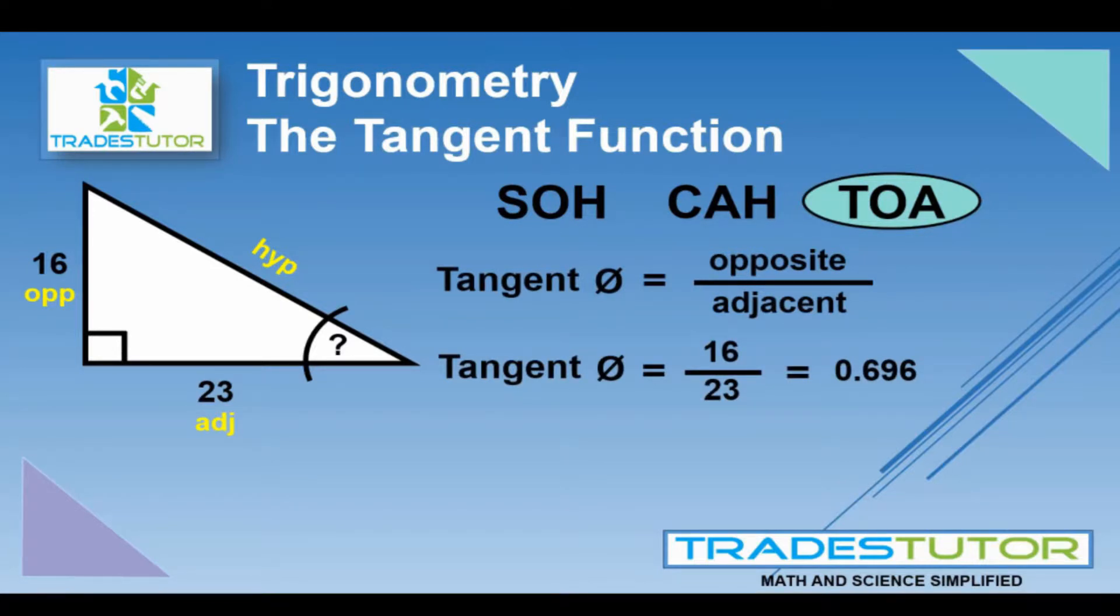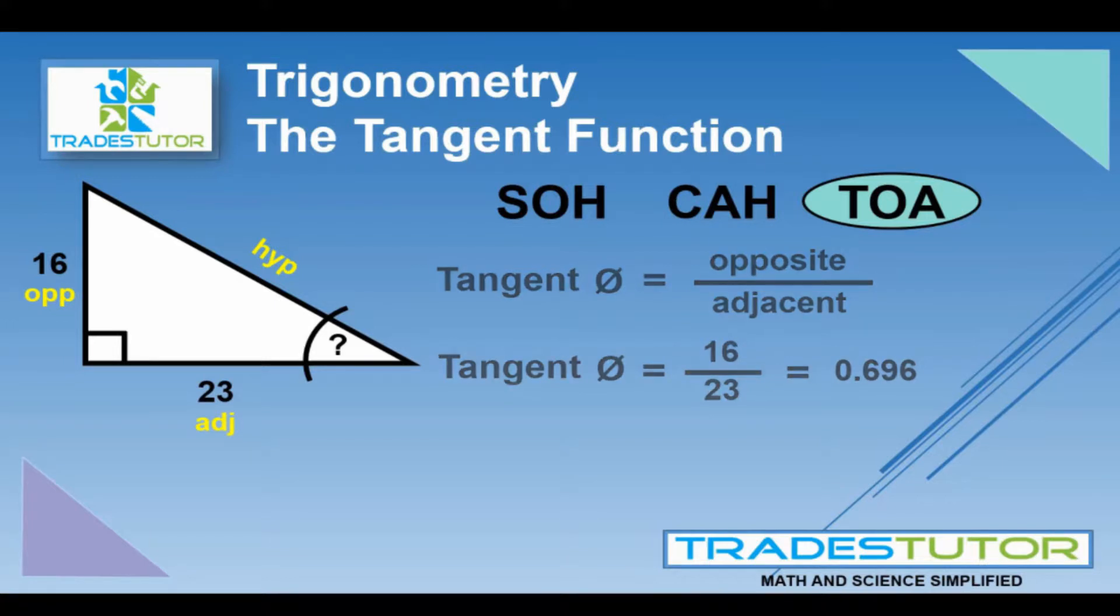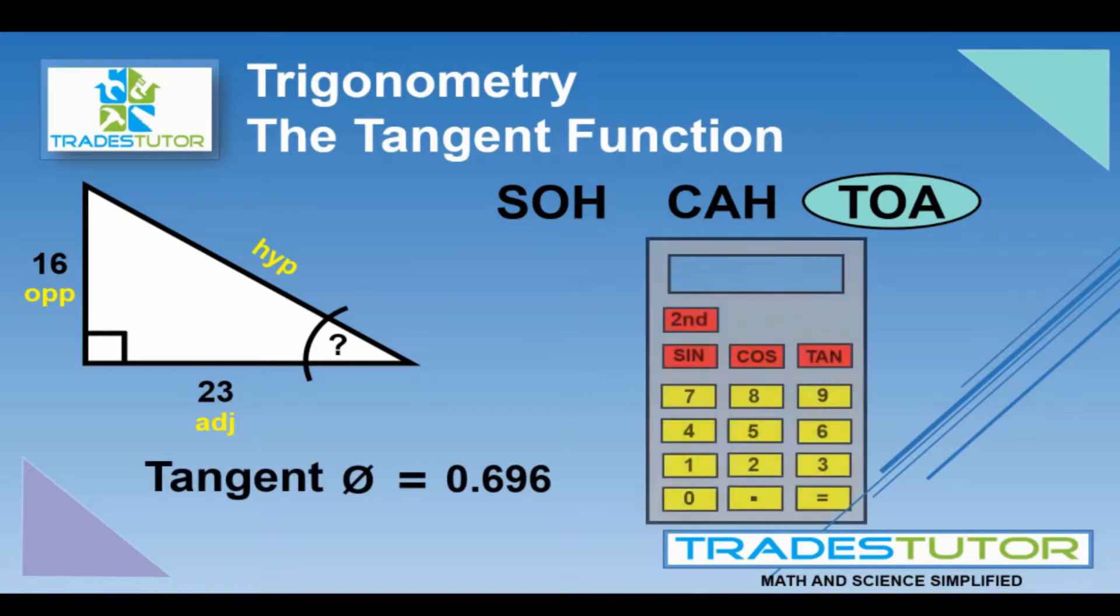We have to take that number, put it into our calculator, and generate an angle. So, how we do that, we'll take that away, put this over here, we'll bring up our calculator. And what you do is you take the 0.696 and you type it into the calculator.